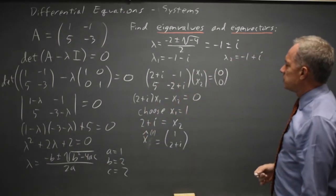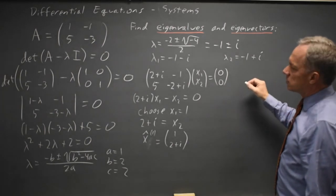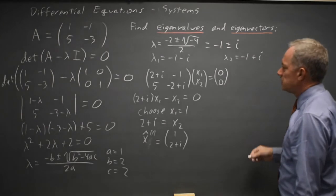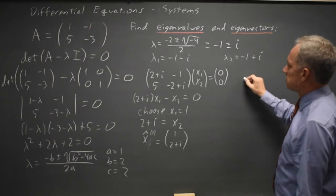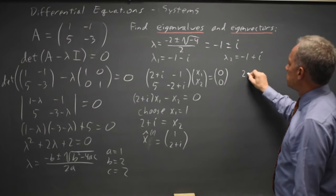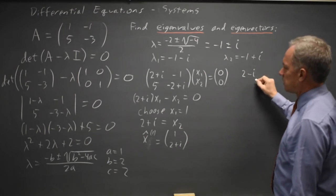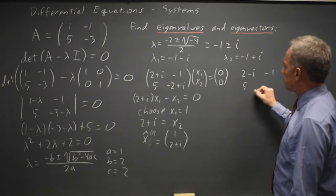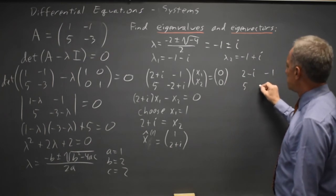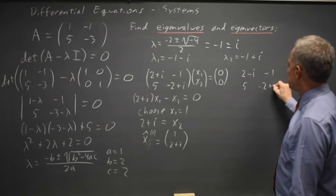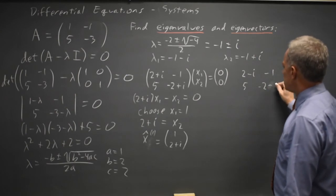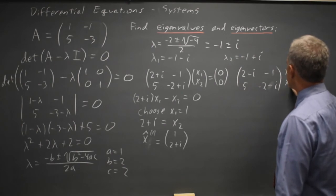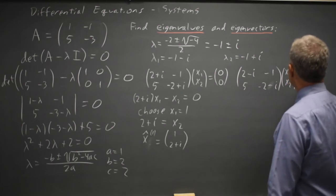Let's find our second eigenvector. So the same A minus lambda times identity gives me [2 minus i, -1; 5, -2 minus i] times [x1, x2] equals the 0 vector.